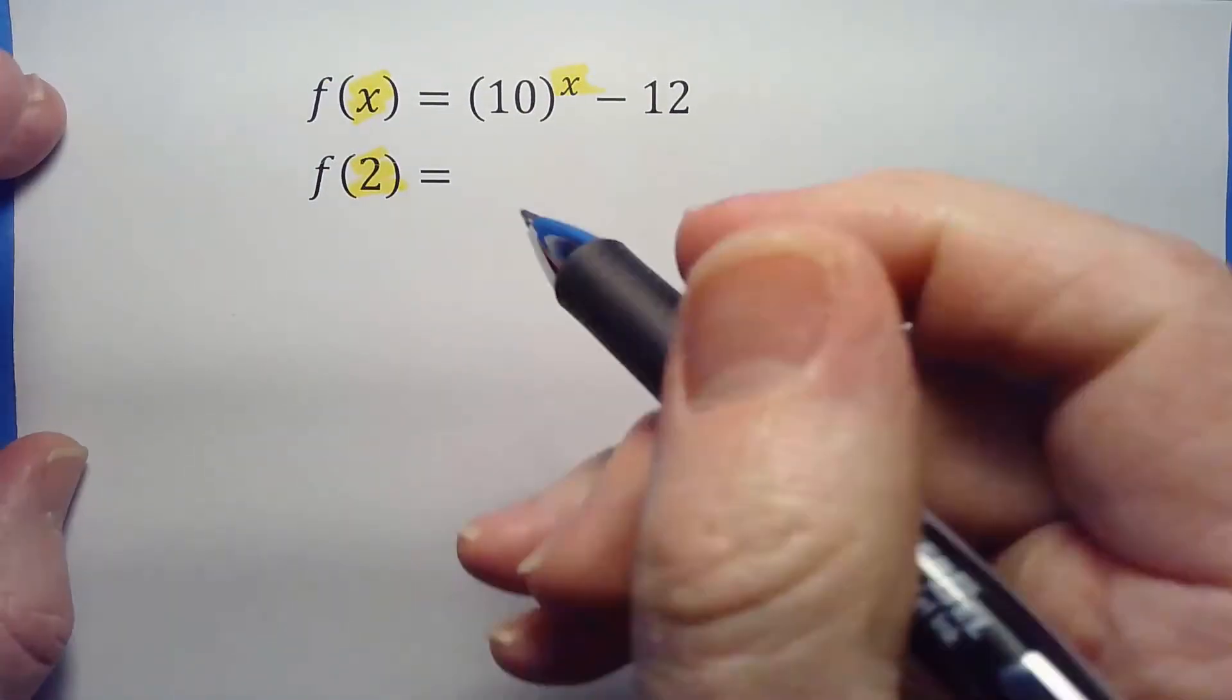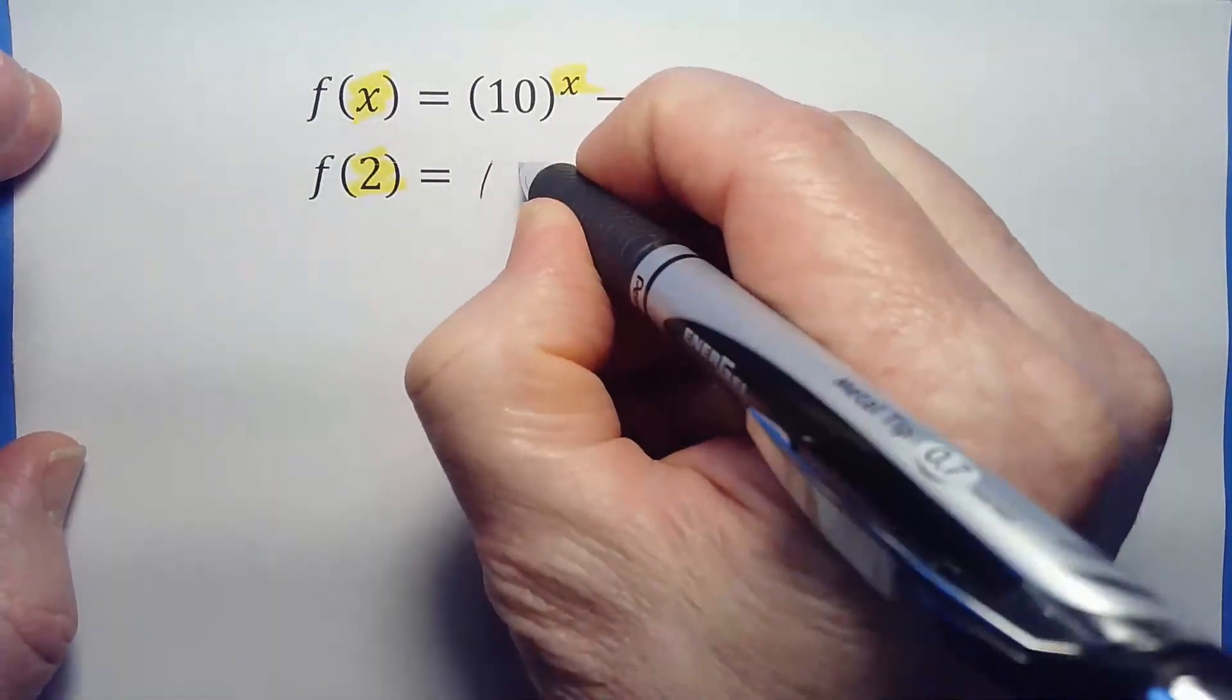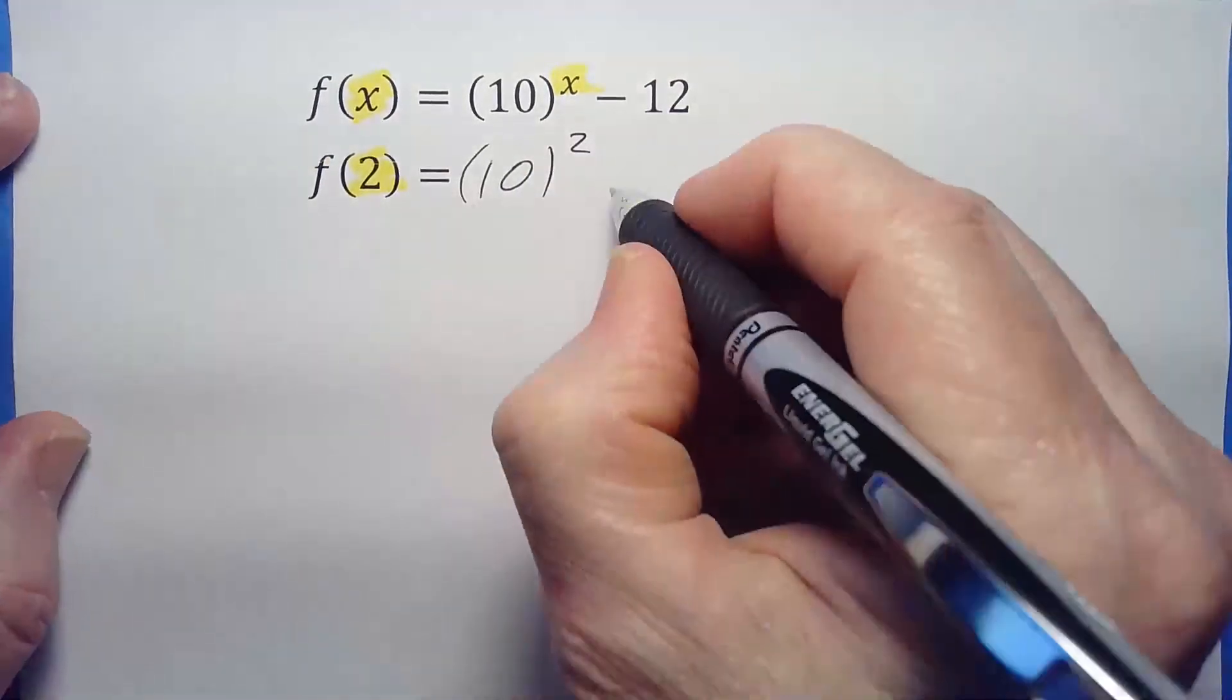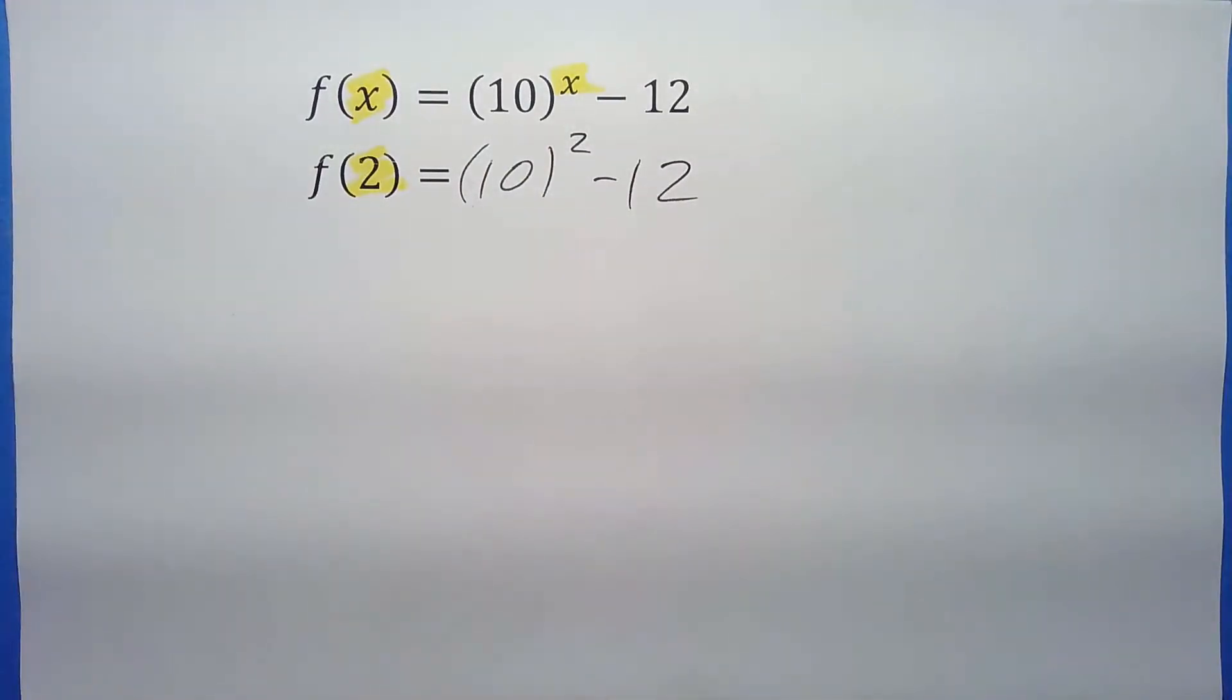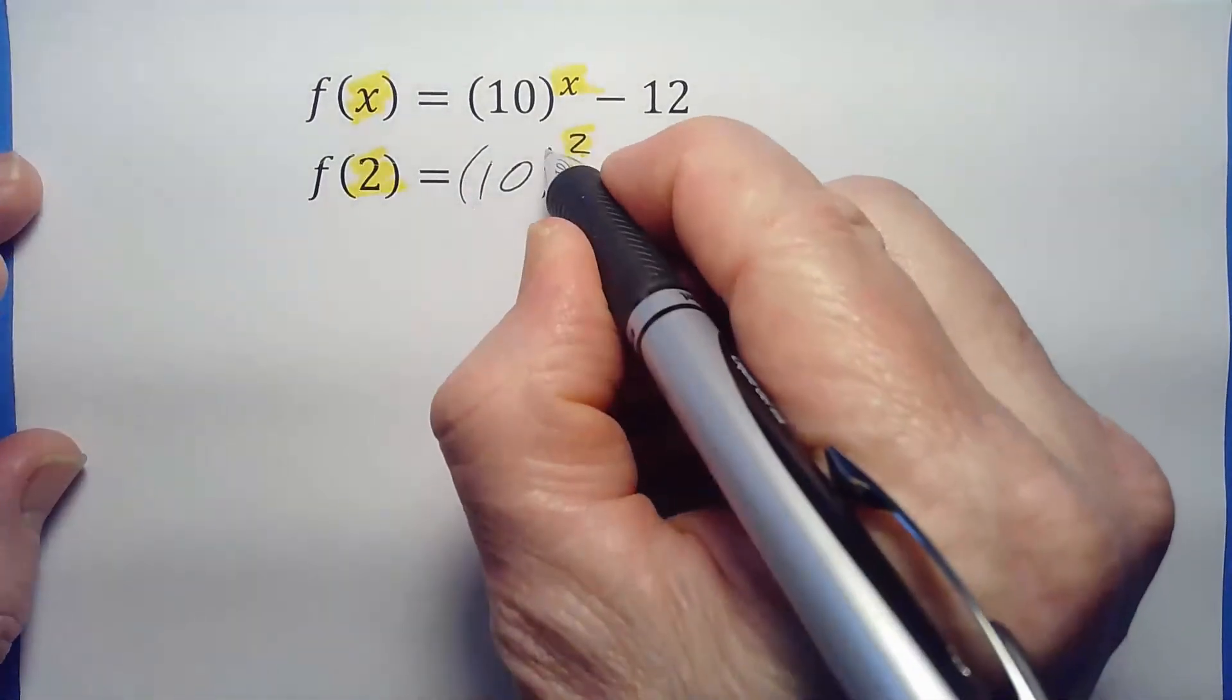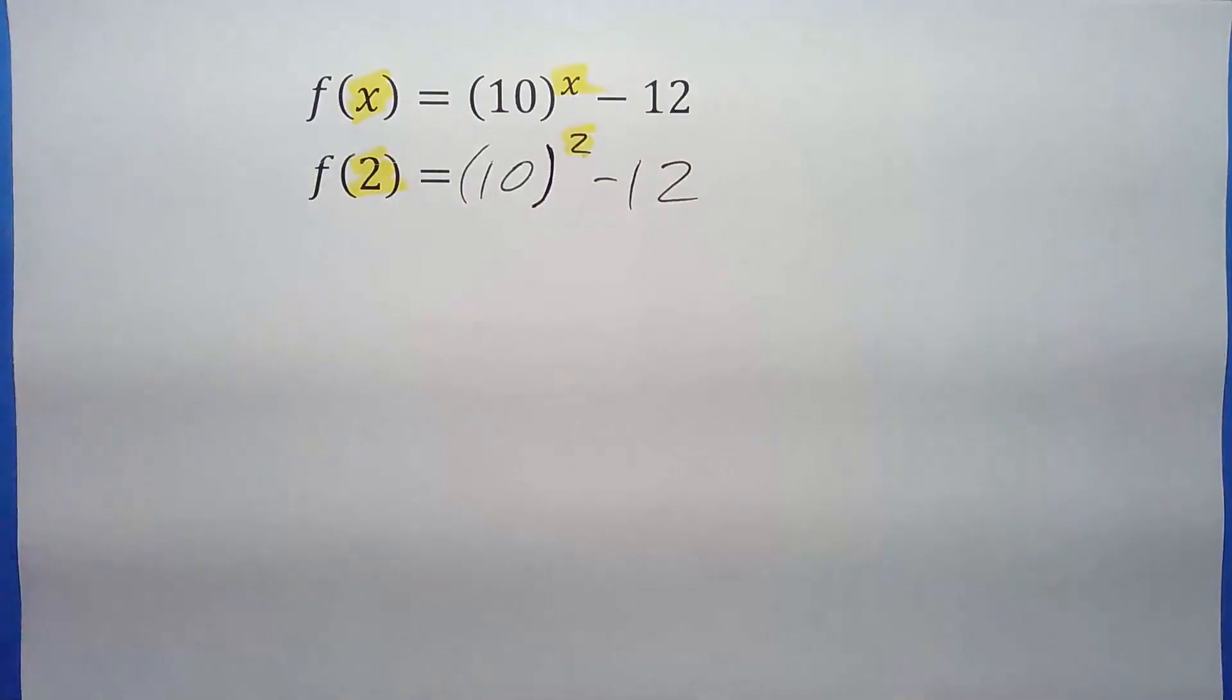So this is going to be 10 to the power of 2 minus 12. Let me make sure that's a little more obvious. That's a parentheses—can you see that?